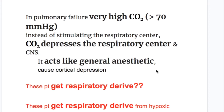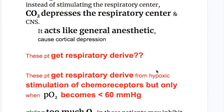For example, in pulmonary failure, very high carbon dioxide — more than 70 millimeters of mercury — instead of stimulating the respiratory center, carbon dioxide depresses the respiratory center and CNS. It acts like a general anesthetic when in very high concentration and causes cortical depression.